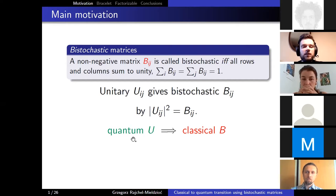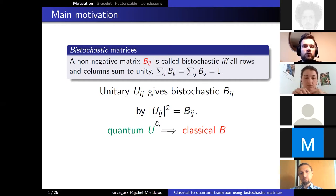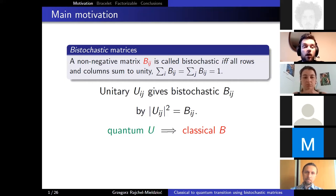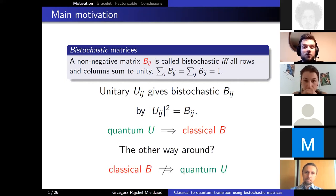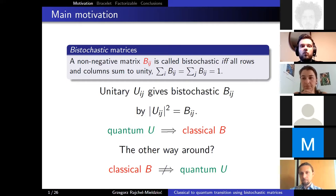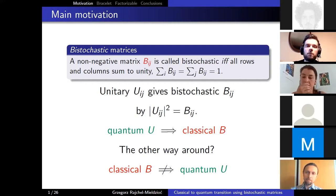Getting a classical matrix out of a quantum one is fairly easy: every unitary matrix has a classical counterpart. But the other way around does not work as well. The problem of finding when it does and when it does not is going to be the main topic of this talk.